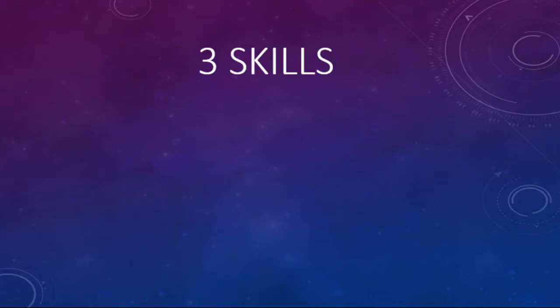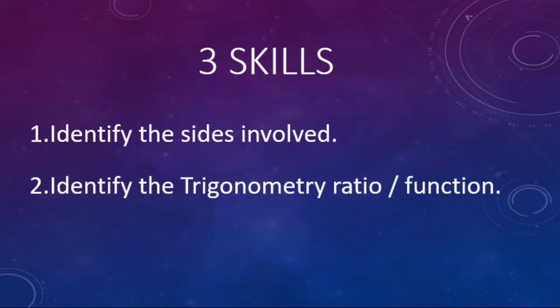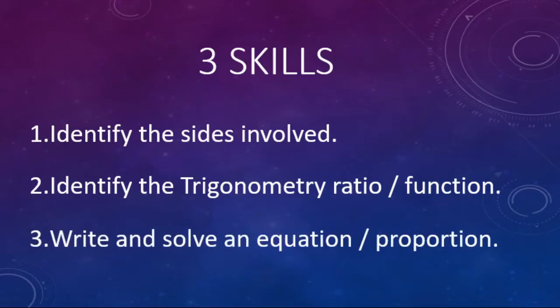To be successful with right triangle trigonometry, you have to be good at three skills. Number one: identify the sides of the right triangle. Number two: identify which trig ratio goes with those sides. And three: you've got to be able to write and solve an equation. We're going to do two and a half of these - we're going to get to writing the equations, and we'll do solving in a later video.